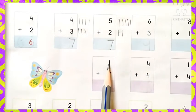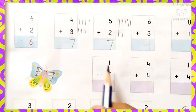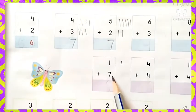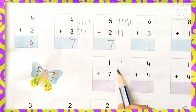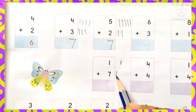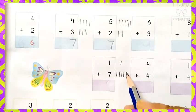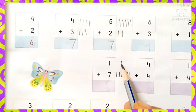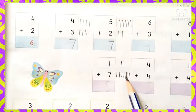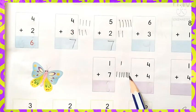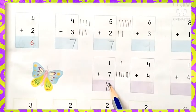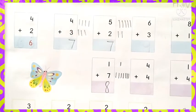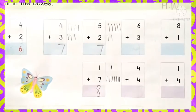We will add one plus seven. Draw only one line on the upside. And the downside number is seven, so we will draw seven lines: one, two, three, four, five, six, seven. Altogether: eight. Answer is eight. We write our answer in this box. It is very easy, children — you will draw lines, then the answer will be correct.